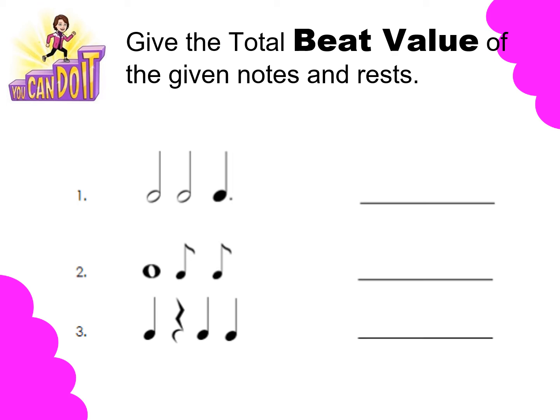The original value of a half note is 2, plus the second musical symbol is another half note. The third musical symbol is a dotted half note, which has a total beat value of 1 and 1 half. So you have 2 plus 2 plus 1 and 1 half equals 5 and 1 half.